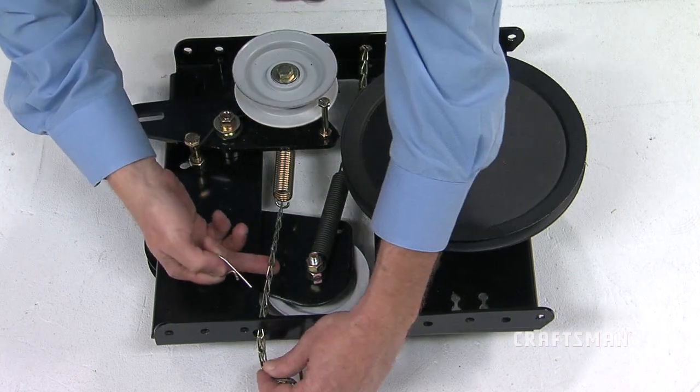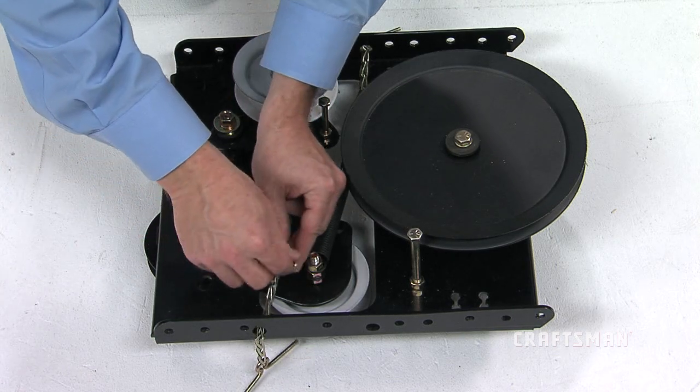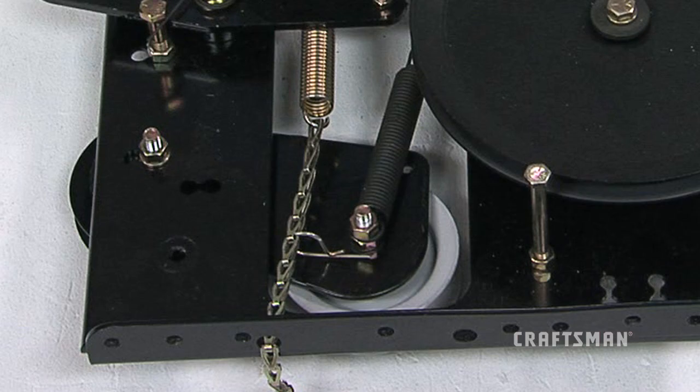Now, install a 3-32-inch hairpin cotter, part QQ, in the chain attached to the upper idler arm, placing it in the 5th link from the spring.